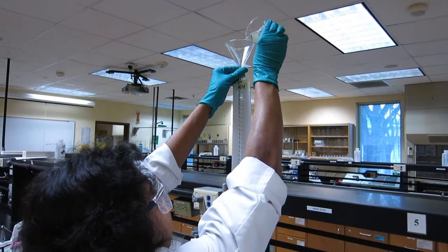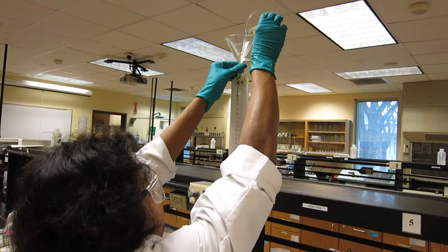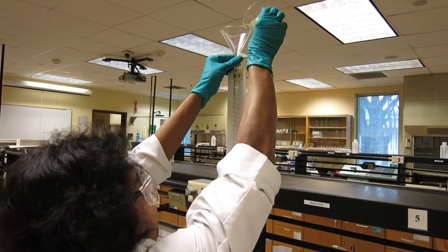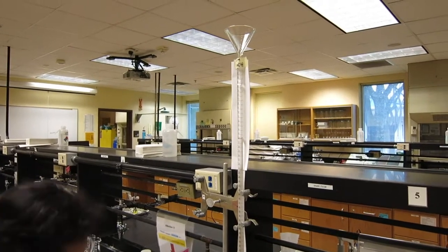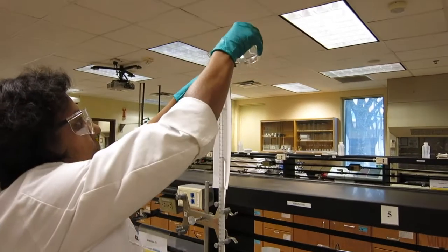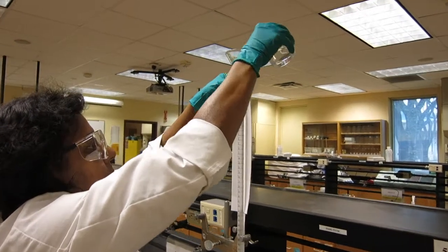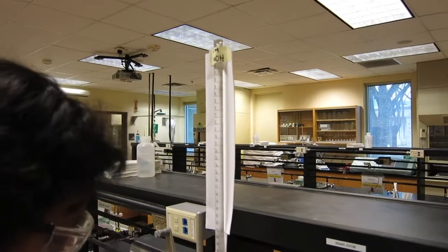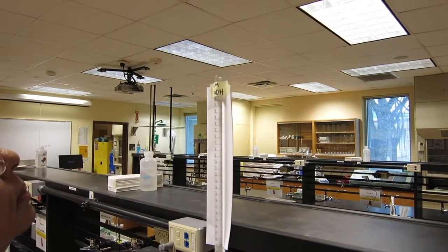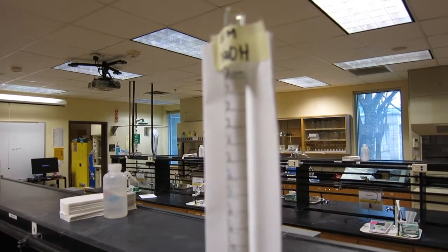We're putting the NaOH into the buret. Just fill it up. Try to hit zero. Now you're adjusting to make sure that it hits zero, so the meniscus rests at zero.